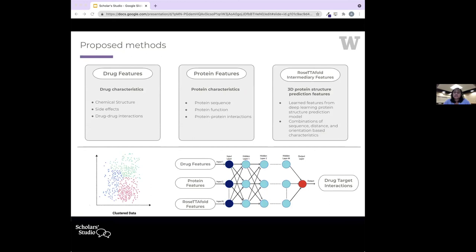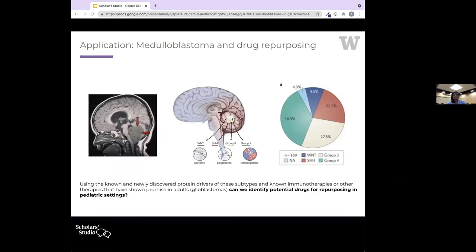The proposed method uses existing models. These are the existing features being used that I showed: the drug features and the protein features, as well as 3D protein structure prediction features, as shown in the top right. What I'm showing in the bottom is I will be constructing a deep learning network that can use all three of these features to improve drug target interactions.